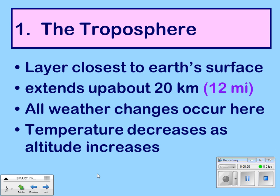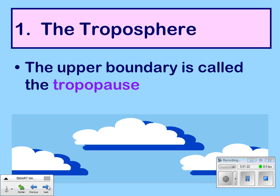The troposphere is the layer closest to the Earth's surface. It extends up about 20 kilometers or about 12 miles. All of the weather changes occur here — if it's raining, sleeting, hailing, whatever, all of that is happening right up against the Earth in the troposphere. Temperature decreases as altitude increases, so when you're flying it gets colder. The upper boundary is called the tropopause — like when you pause a video, the top is called the tropopause.